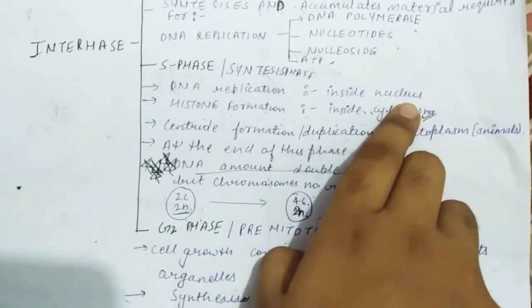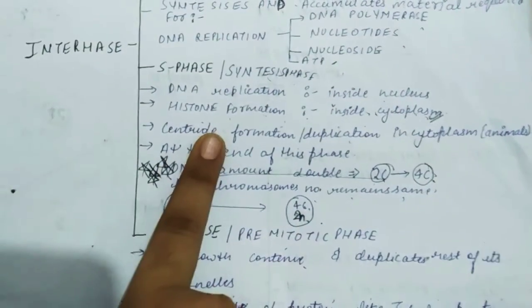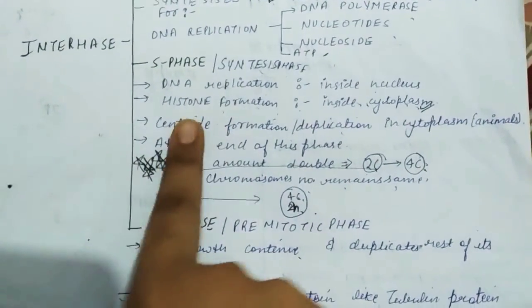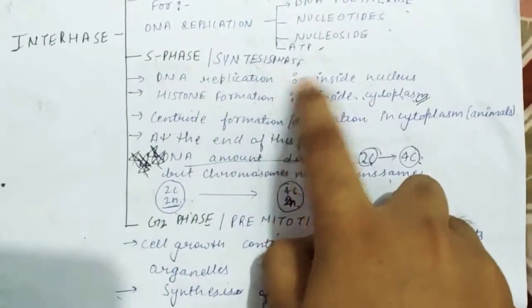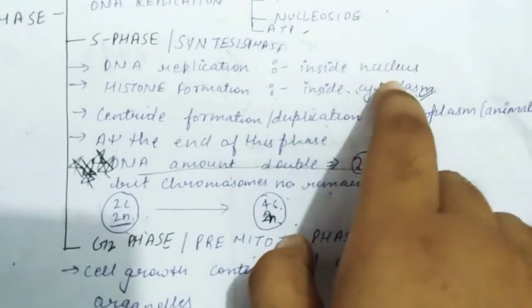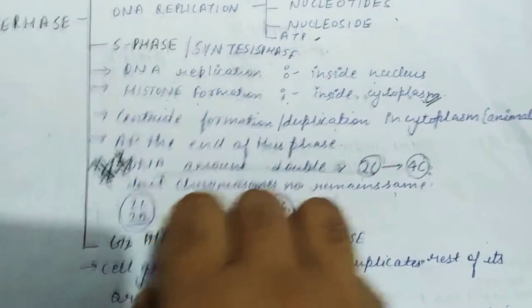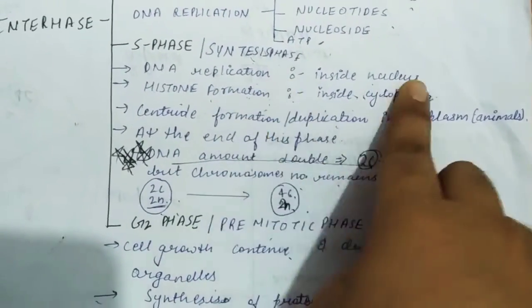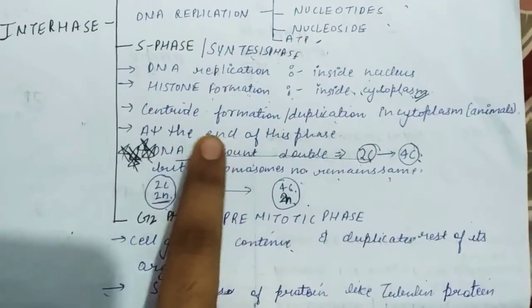DNA replication is inside the nucleus. For DNA packaging, histone is needed. Histone formation is in the cytoplasm, not in the nucleus. This is important information: histone formation is in the cytoplasm, while DNA replication is in the nucleus.